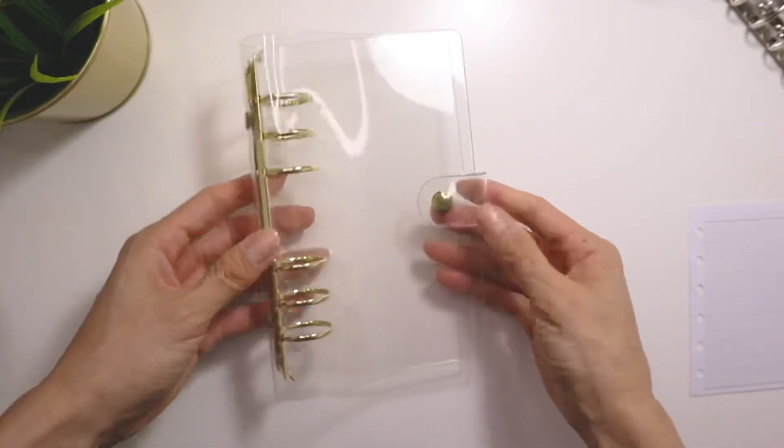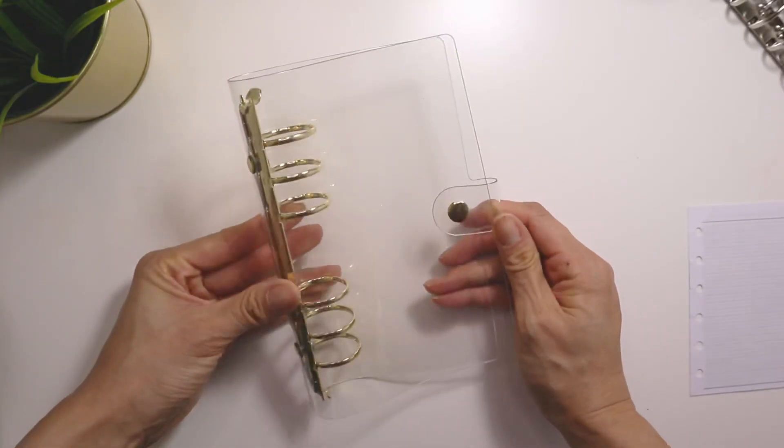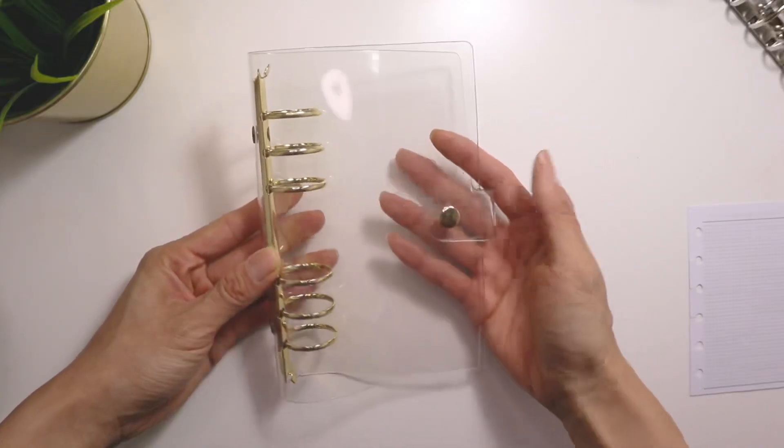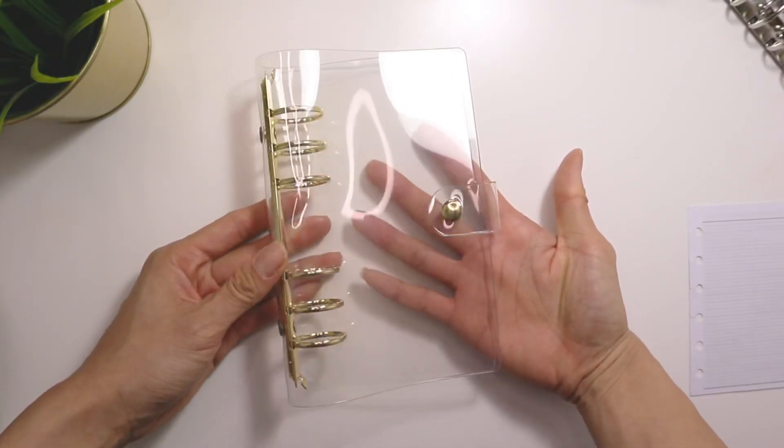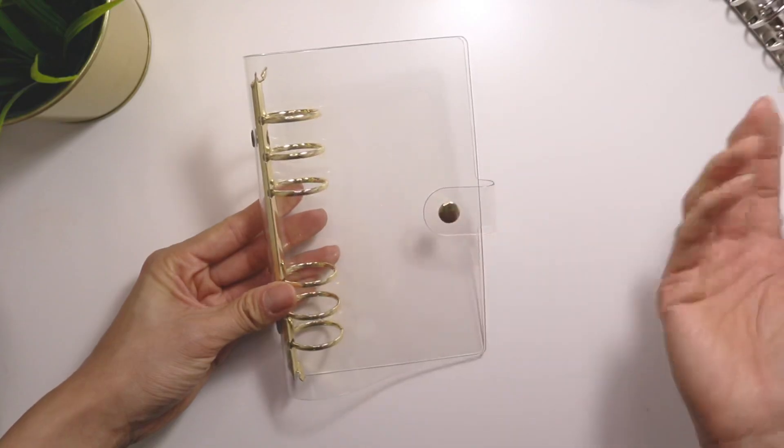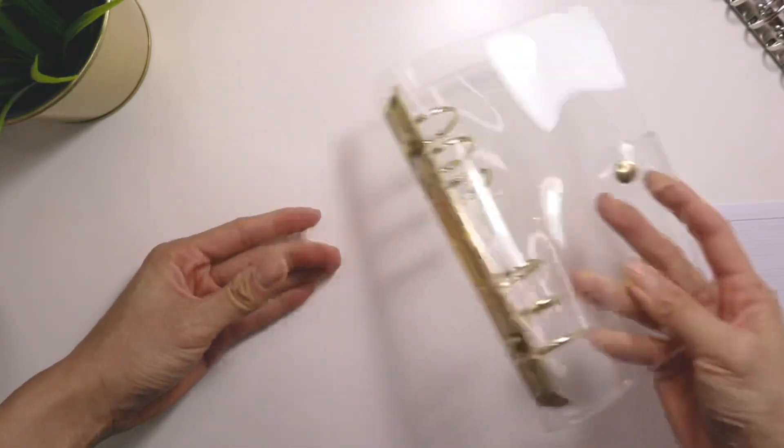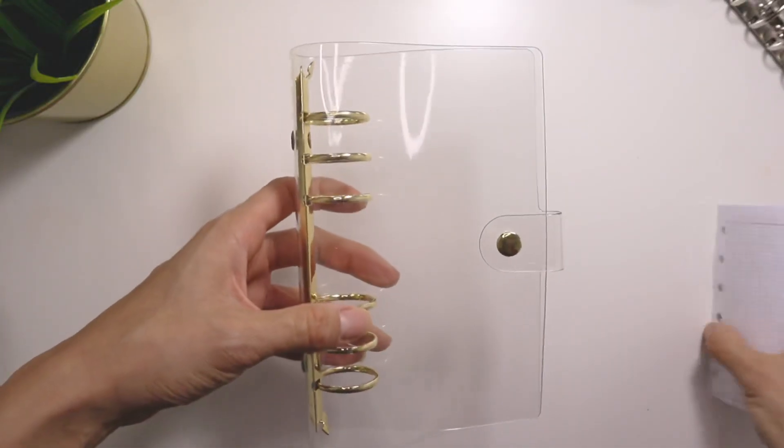So yeah, I like this just because if you want it to, you know, look really nice still, you can keep all your dashboards and they'll still show through in this clear cover. And of course, you can just use this as your actual planner as well. So it kind of is dual purpose again. So I love that. So those were the ideas that I had for rings.